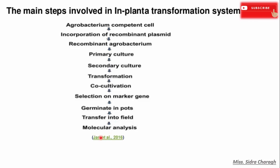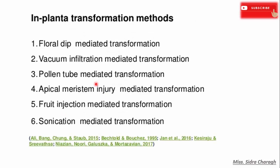After co-cultivation, we select our recombinant plants based on their marker gene, then we re-germinate imports and transfer into the field, and then we perform molecular analysis — including PCR and Southern blotting techniques — to further confirm that our target gene has been introduced into plant cells. There are five to six basic in-planta transformation methods.